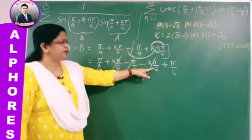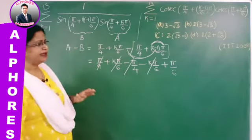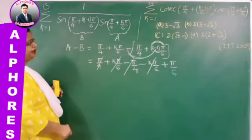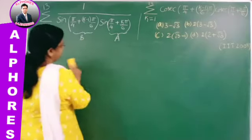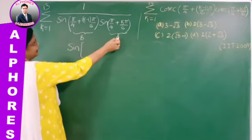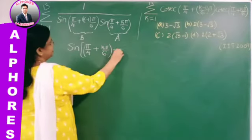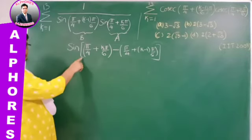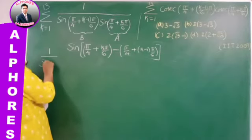Now sigma K = 1 to 13 gives us 1/sin(π/6) — since sin 30° = 1/2, the value 1/(1/2) = 2. Let alpha = π/4 + Kπ/6 and beta = π/4 + (K−1)π/6 to avoid writing long terms repeatedly. So we have 2 times sigma of sin(alpha − beta) divided by sin(alpha)·sin(beta).